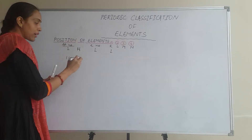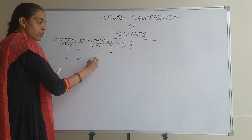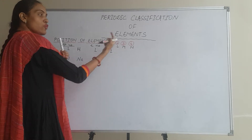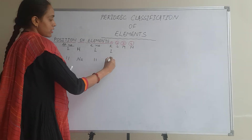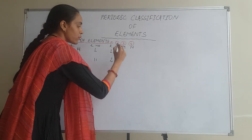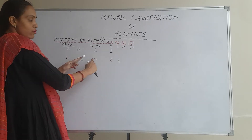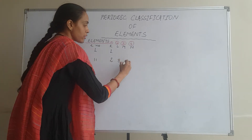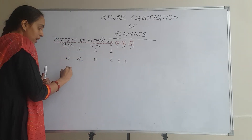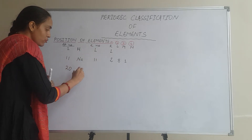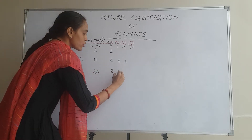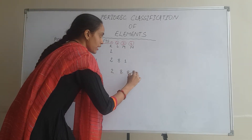Take the example of the 11th atom, which is Sodium. Electrons will also be 11. To fill the electronic configuration: K shell gets the maximum 2 electrons, L shell gets the maximum 8 electrons — that's 10 total — so the 11th electron is left and is filled in the M shell. One more example: the 20th element, Calcium, has 20 electrons, and the configuration will be 2, 8, 8, 2.